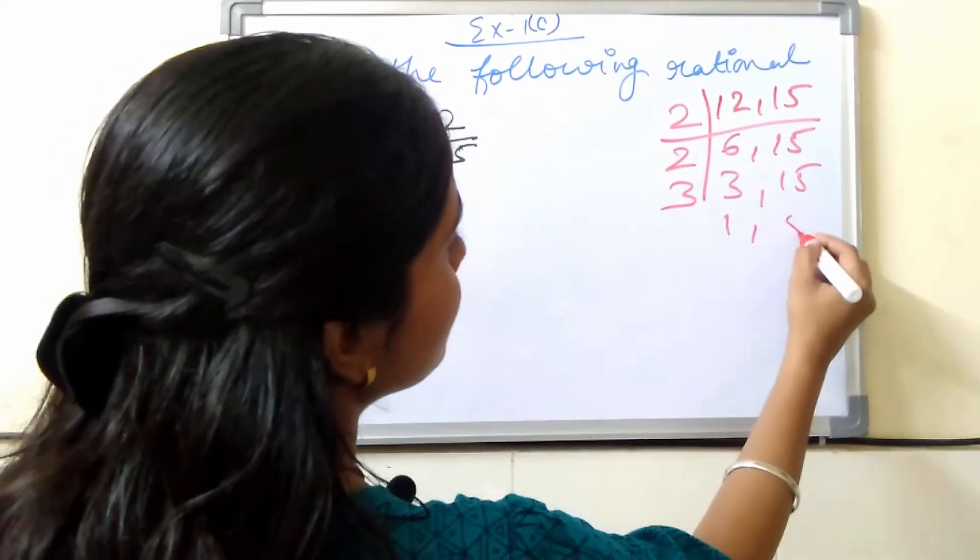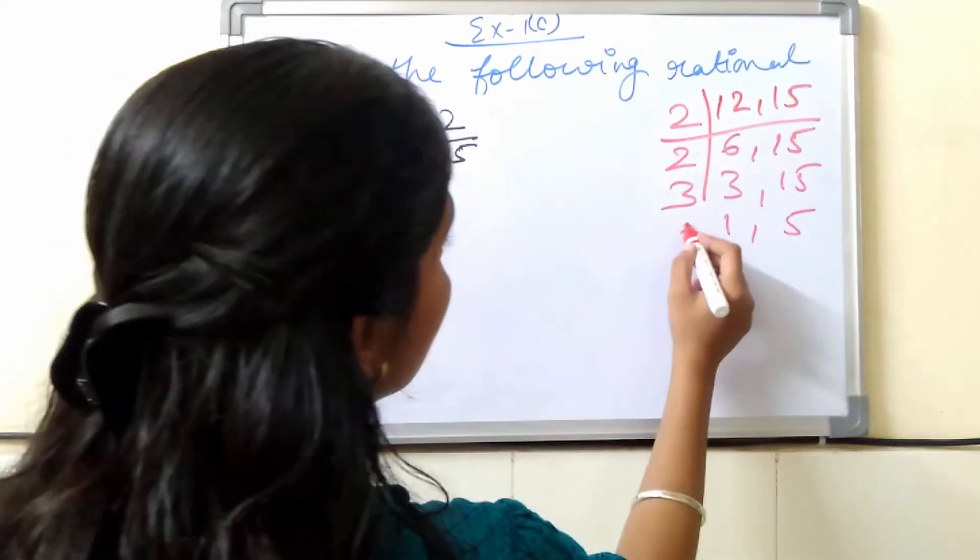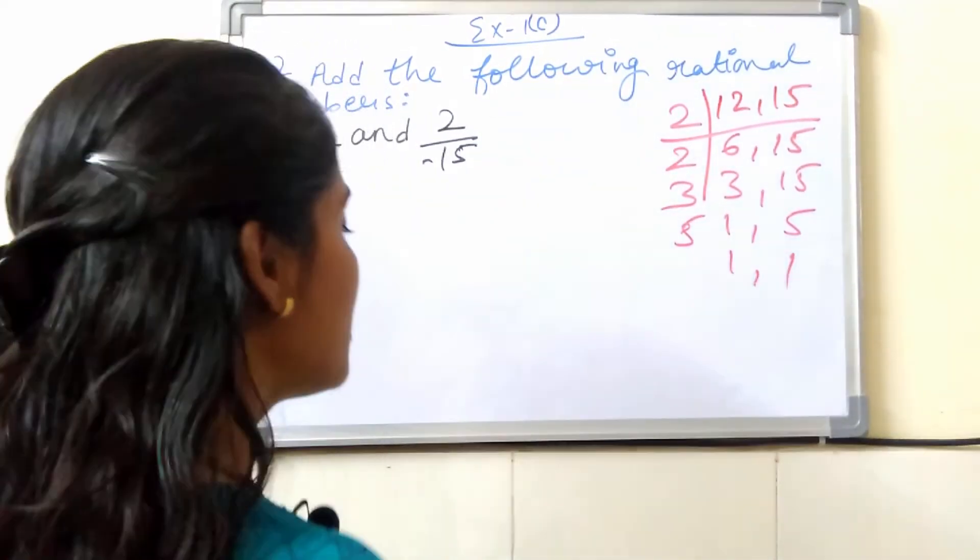3, 1s are 3. 3, 5s are 15. Now, we divide from 5. 1 as it is, 5, 1s are 5.